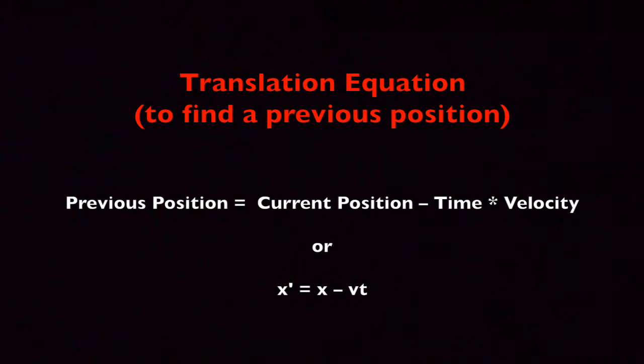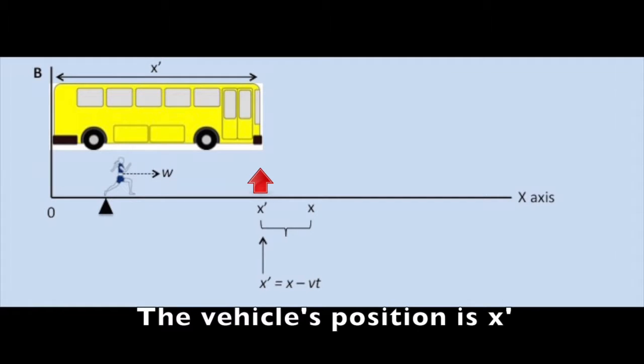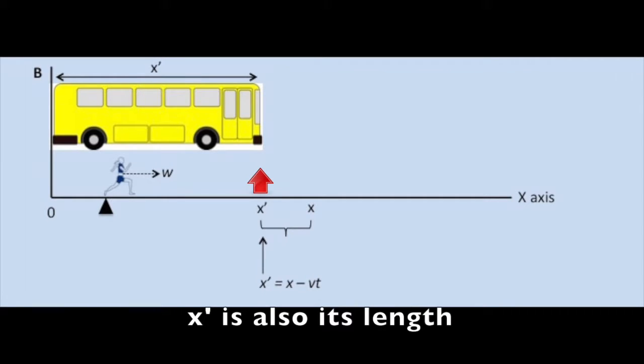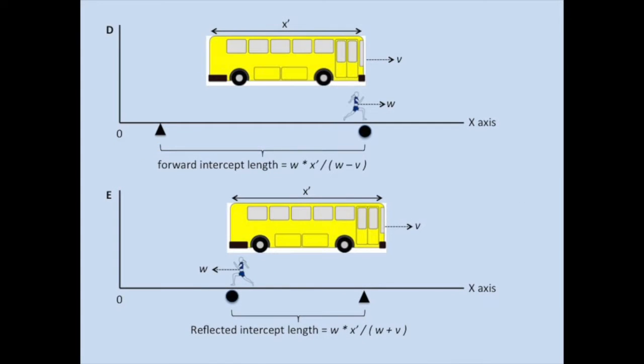So we can use the translation equation in reverse to find x prime. The equation is x prime equals x minus v times t. This equation tells us the previous position of the front of the bus, and our assumption allows us to use this position as the bus's length.